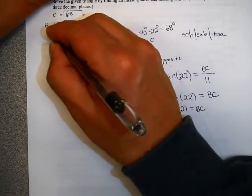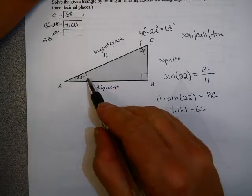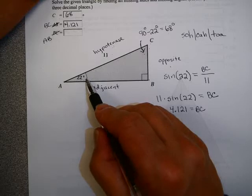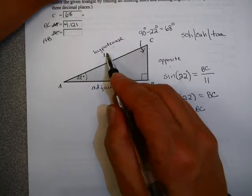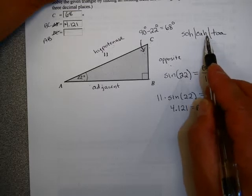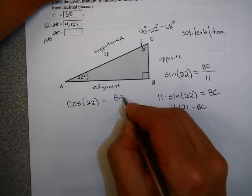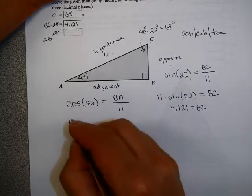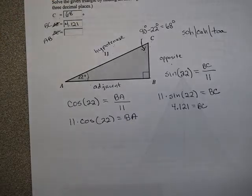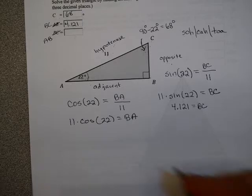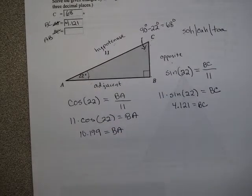Now for AB: AB is the adjacent side. Still using angle 22 degrees, this is the adjacent side and the hypotenuse is 11. Looking at SOHCAHTOA, adjacent over hypotenuse means cosine. So cosine of 22 equals AB over 11, which gives AB equals 11 times cosine of 22. On the calculator, that gives 10.199 for BA.